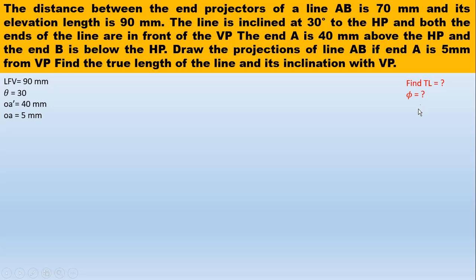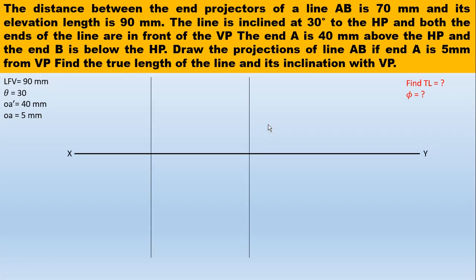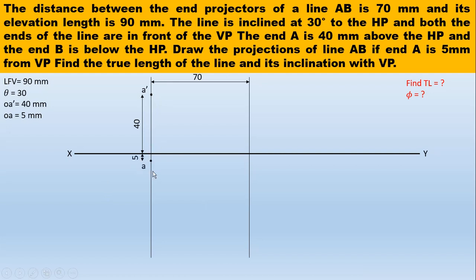Let's list out the data: length of front view is given 90mm, true inclination with HP is given as theta, position of A is given, and we have to find the true length and true inclination with respect to VP. Let's start the problem. First, take the reference plane XY and draw two vertical lines at a distance of 70mm — these are the end projectors, so our front view and top view of the line will lie on these two vertical lines. Now locate point A: 40mm above HP and 5mm in front of VP.